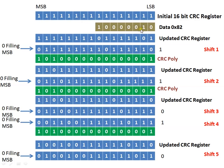The first data byte to be transmitted is XORed with the lower bits of the 16-bit CRC register. The XOR operation is performed: 1 XOR 0 = 1, 1 XOR 1 = 0, and so on. The resultant value updates the CRC register. Then a right-shift operation is performed on this register, with the MSB bit filled with 0. This is the first shift operation, and 8 shift operations are needed for one byte of 8 bits.